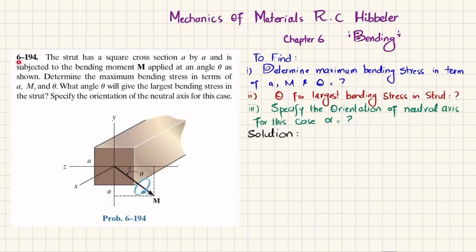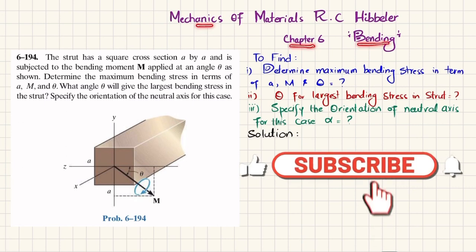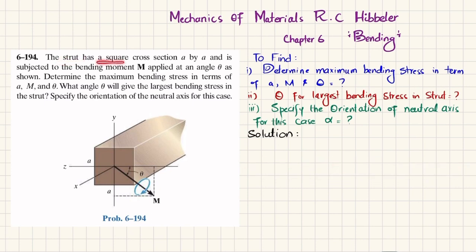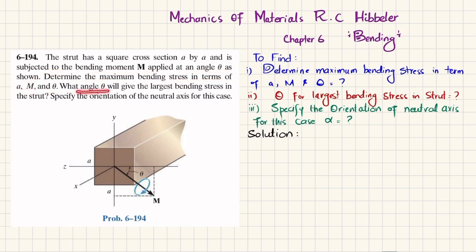Welcome back. Problem 6-194, taken from Chapter 6 on Bending in the book Mechanics of Materials by R.C. Hibbeler. The problem states: a stress strut has a square cross-section a by a and is subjected to a bending moment applied at an angle theta, as shown. Determine the maximum bending stress in terms of a, M, and theta.